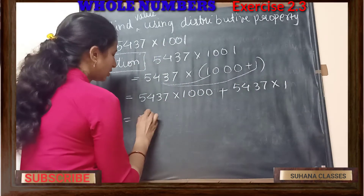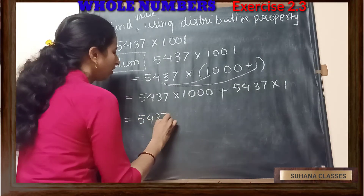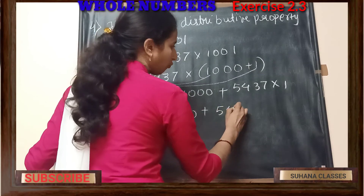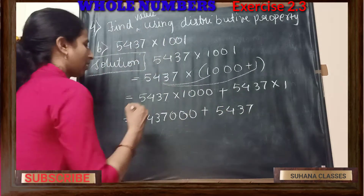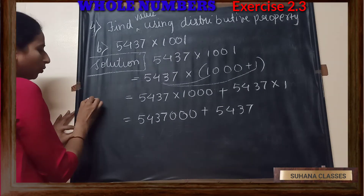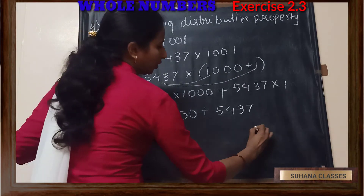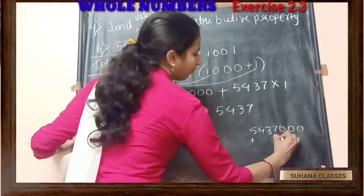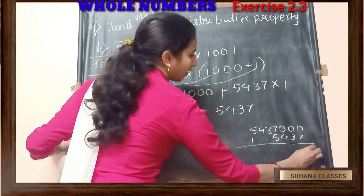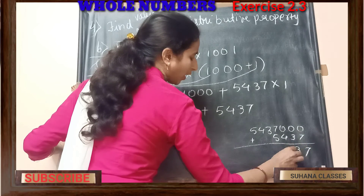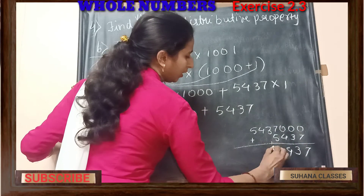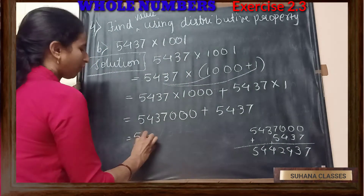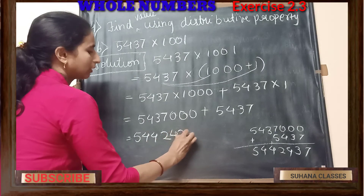If I multiply these two numbers: 5437 into 1000 gives 5437 with 3 zeros added, that is 5437000. Plus, 5437 into 1 gives 5437. Now addition is much easier. I have 5437000 plus 5437. 7 plus 7 is 14 — 1 carry — then 3 plus 3 is 7 — wait — 7 as it is, 7 plus 5 is 12 — 1 carry — then 4, 4, 5. My answer is 5442437.